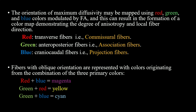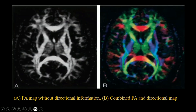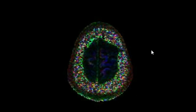Fibers with oblique orientation are represented with colors originating from combinations of the three primary colors: red and blue mixed to form magenta, green and red mixed to form yellow, and green and blue mixed to form cyan. This is the raw data of diffusion tensor imaging, and this is the combined fractional anisotropy and direction map, which is used for diagnostic purposes.